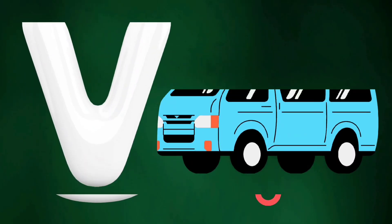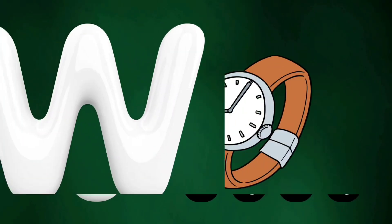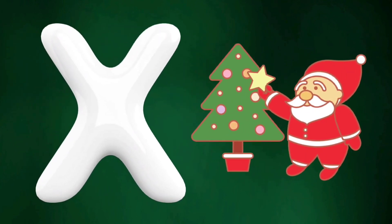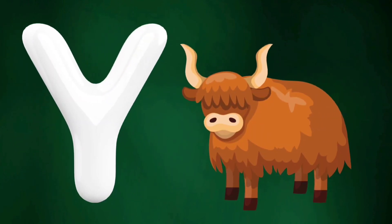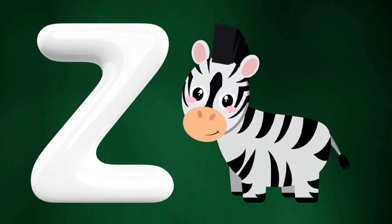S is for sheep, T is for tiger, U is for umbrella, V is for man, W is for watch.